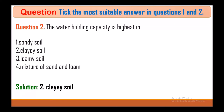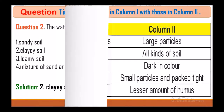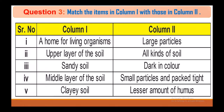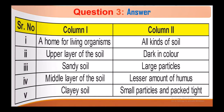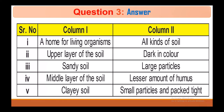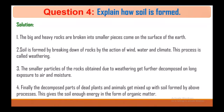Question 3: Match the items in Column 1 with Column 2. The correct matches are: home for living organisms — all kinds of soil; upper layer of the soil — dark in color; sandy soil — large particles; middle layer of the soil — lesser amount of humus; clay soil — small particles and packed tight.